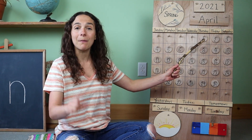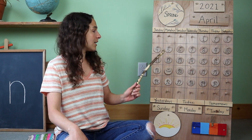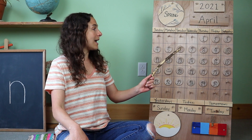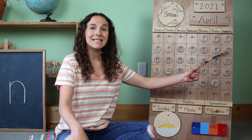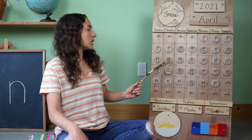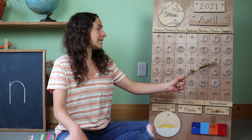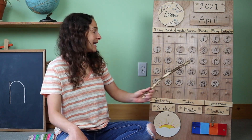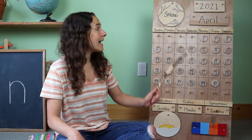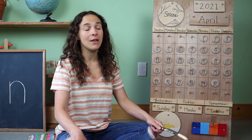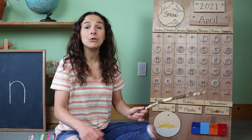We'll start up at the top with the number 1, 2, 3, 4, 5, 6, 7, 8, 9, 10, 11, 12, 13, 14, 15, 16, 17, 18, 19. We have had 19 days so far in the month of April. And look at this friends — the month of April is almost over.